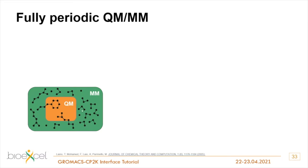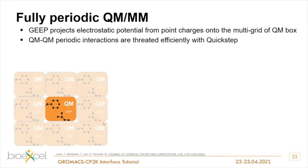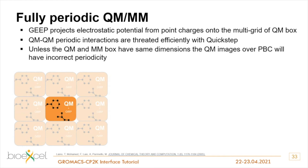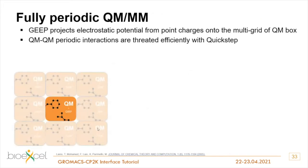For fully periodic systems, CP2K uses a Boys-GEEP plus additional scheme. CP2K projects the MM point charges via GEEP onto the QM part, placing the system in a small quantum box - usually much smaller than the whole system box. CP2K then calculates a periodic QM box and converges the electron density using QuickStep. However, unless the QM and MM box dimensions are the same, the periodicity is wrong because the initial system had a different arrangement.